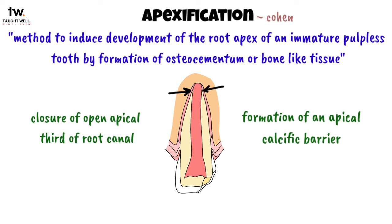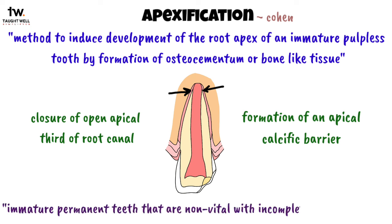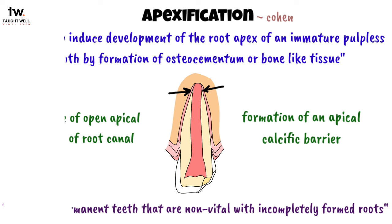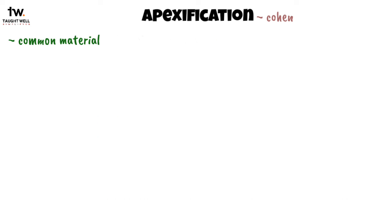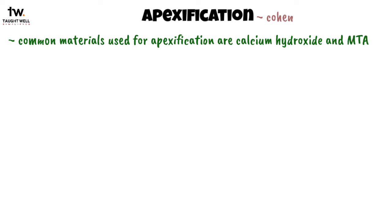To put it in simple words, apexification is indicated for immature permanent teeth that are non-vital with incompletely formed roots. The most common materials used for apexification are calcium hydroxide and MTA.